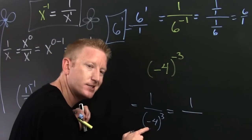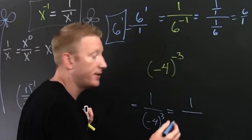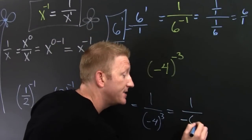Since that's an odd power, this product is going to stay negative. And then that's minus 4 times minus 4 times minus 4. 16? No. 64. Like the Nintendo.